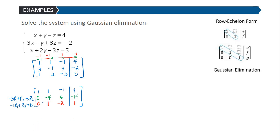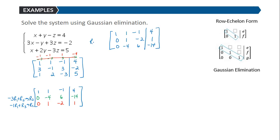Now we have the 1 leading in the first row with zeros below it. I need to get a 1 in the second row, second column. Row 3 already has a 1 in that position, so I'm going to interchange row 2 and row 3. The new matrix is: 1, 1, negative 1, 4; then 0, 1, negative 2, 1; then 0, negative 4, 6, negative 14.